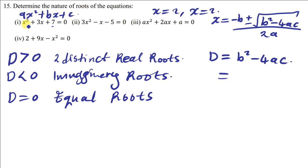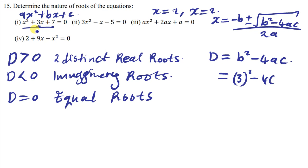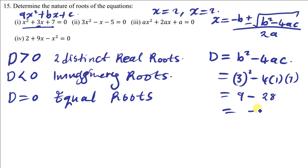Let's plug in the coefficients of this quadratic equation into the discriminant. The coefficient of x squared is 1, so a equals 1. The coefficient of x is 3, so b equals 3. The constant is 7, so c equals 7. So D equals 3 squared minus 4 times 1 times 7. That gives us 9 minus 28, which equals negative 19.